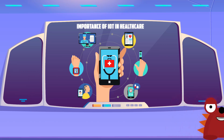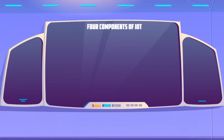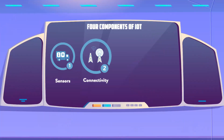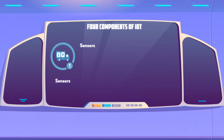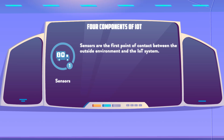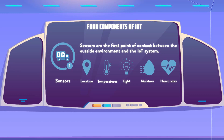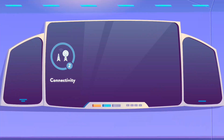There are mainly four components of IoT: sensors, connectivity, data processing and user interface. Sensors are the first point of contact between the outside environment and the IoT system. They are embedded in gadgets and appliances and work to collect data from the surroundings, such as the location, temperatures, light and even moisture and heart rates. A well-known example is a smartphone, which has such sensors.